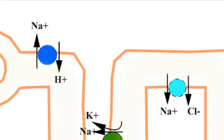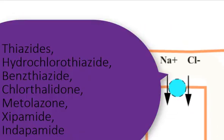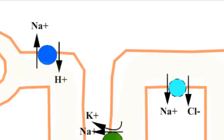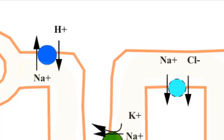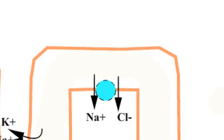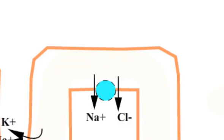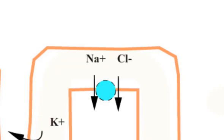The distal tubule is the site of action of thiazides such as hydrochlorothiazide and benzthiazide, and thiazide-like diuretics such as chlorthalidone, metolazone, xipamide, and indapamide. These diuretics act mainly on the early segments of the distal tubule, where they inhibit sodium and chloride reabsorption by binding to the symporter responsible for the electroneutral cotransport of sodium and chloride.